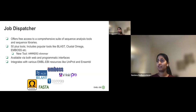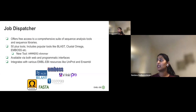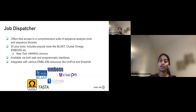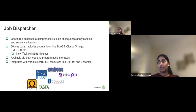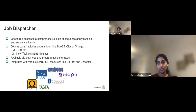You might already be familiar with Job Dispatcher. The Job Dispatcher team provides various tools for protein and nucleotide sequence analysis. We currently have more than 50 sequence analysis tools — some are developed and maintained by the EBI and some are external, like NCBI's BLAST, Clustal Omega, etc. This year we have added a new tool called nHMMER, which is a similarity search tool where you can search for your DNA sequence against EBI's sequence databases.